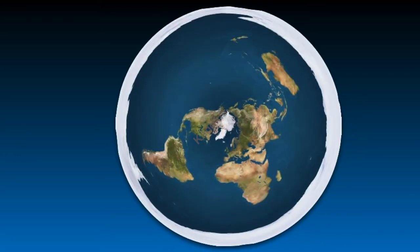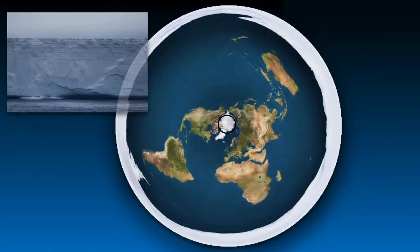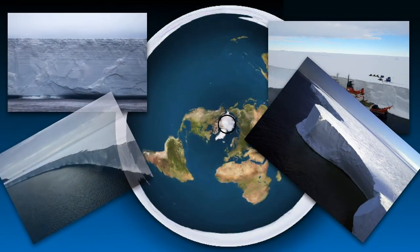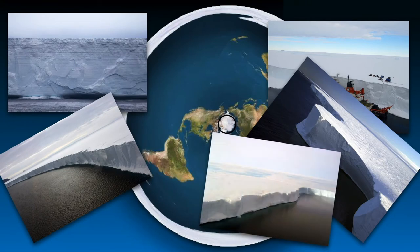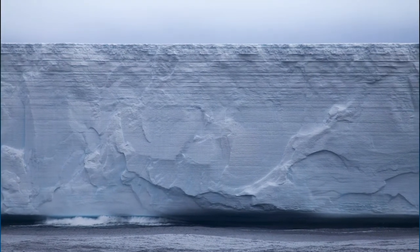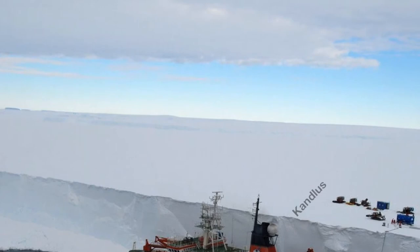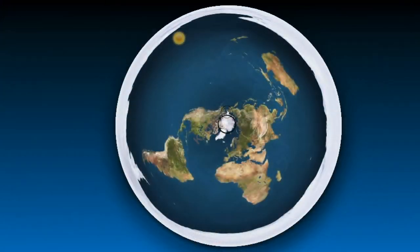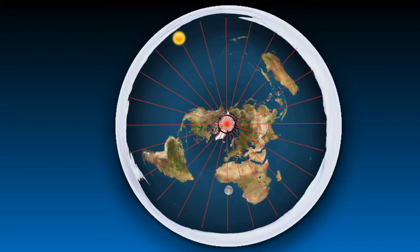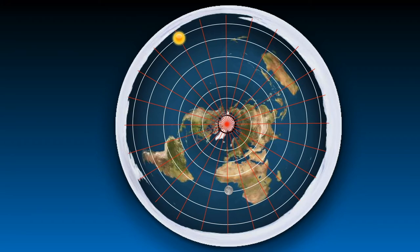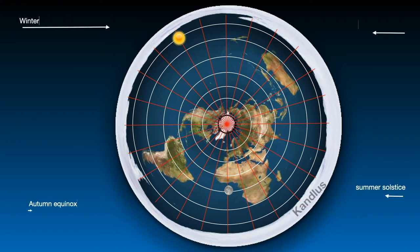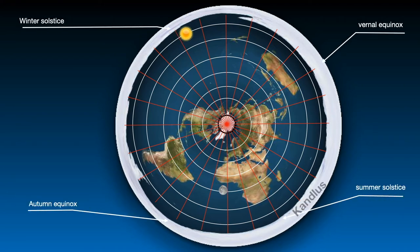Let's take a closer look at their ideas. First of all, you should know that according to them, the Earth is flat and the North Pole is in the center of the Earth, and around the Earth is surrounded by an ice wall 45 meters high. This flat Earth has a sun and a moon that revolve around it. The sun begins its journey from the winter solstice, and in this orbit the speed of the sun is faster than other orbits, which is the largest orbit.